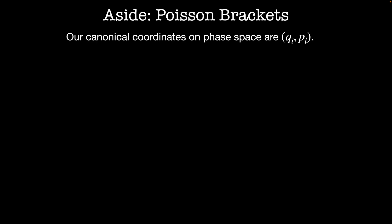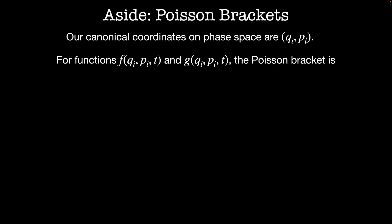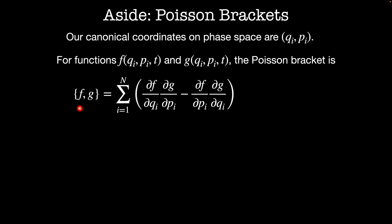To answer that question, we'll have to do a little aside on Poisson brackets. Poisson brackets are the classical analog of the quantum mechanical commutator. We'll start with a set of canonical coordinates on phase space — some generalized positions qi and their corresponding generalized momenta pi. Imagine we have two functions on phase space, f which is a function of the qi's, pi's, and time, and g which is also a function of the qi's, pi's, and time. Then the definition of the Poisson bracket, written as {f, g}, is given by the sum from i equals 1 to n of df/dqi times dg/dpi minus df/dpi times dg/dqi.